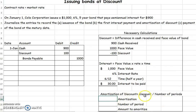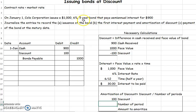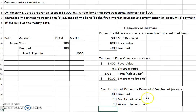The amortization of the discount equals the discount — $100 — divided by the number of periods. This is a five-year bond and we amortize it twice a year, so five times two equals ten periods total. The amount to amortize will be $100 divided by 10, so every single payment period we're going to amortize this bond by $10.